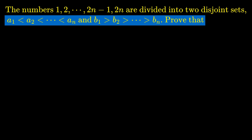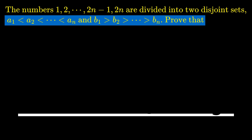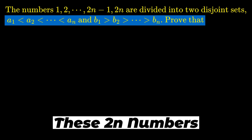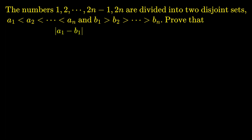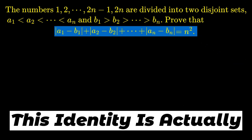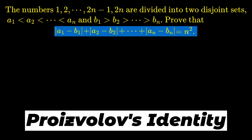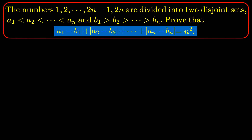The second set consists of the numbers b1, b2, up to bn, ordered in descending order. Our goal is to show that no matter how you assign these 2n numbers into the two sets, the sum of absolute values |a1 - b1| + |a2 - b2| + ... + |an - bn| is always equal to n squared. This identity is called the Prouhet-Thue-Morse identity, proposed as a problem for the contest in 1985.